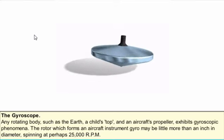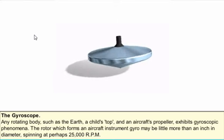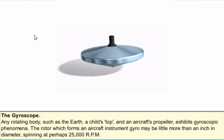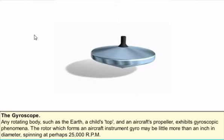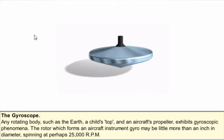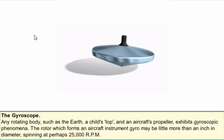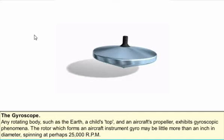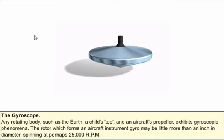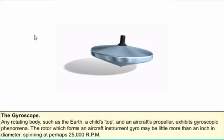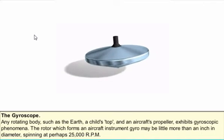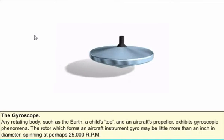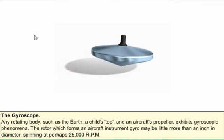Any rotating body exhibits gyroscopic phenomena. The earth is a gyro spinning about the imaginary axis between the geographic poles. A child's top is a gyro, and so is an aircraft propeller when it's turning, especially at high RPM.